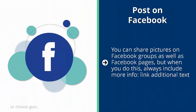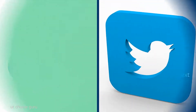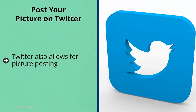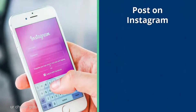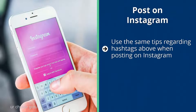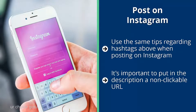Post on Facebook: you can share pictures on Facebook groups and pages, but always include a 'more info' link and additional text. Do this for direct posts on Facebook groups, comments on Facebook groups, and posts on Facebook pages as well. Post your picture on Twitter, rotating niche-related hashtags each time you post — use a scheduler to post at different times of the day to maximize visibility. Post on Instagram: find as many different niche-related hashtags as possible. Also post a comment on Instagram that builds interest in your picture, and include a non-clickable URL in the description so people can load it in their browser if they're intrigued.